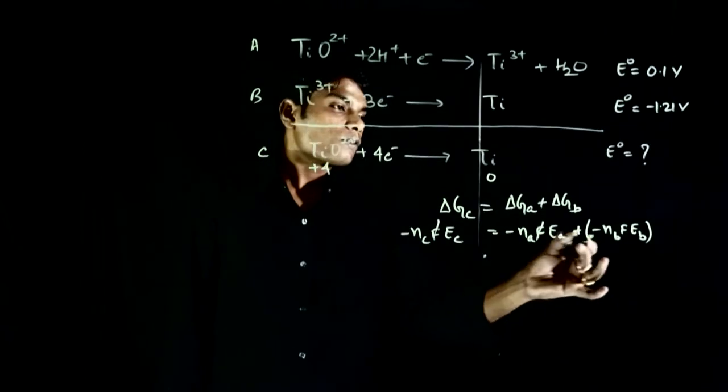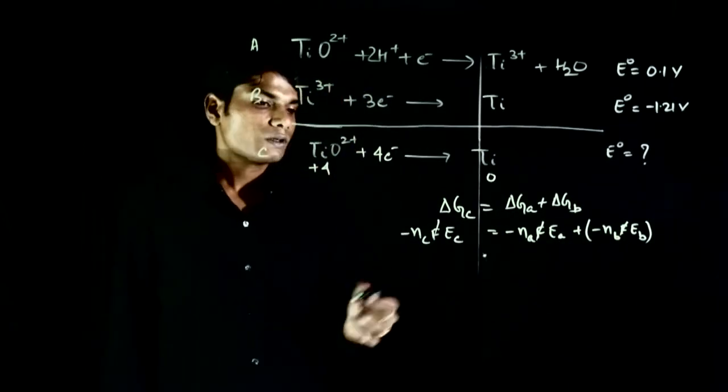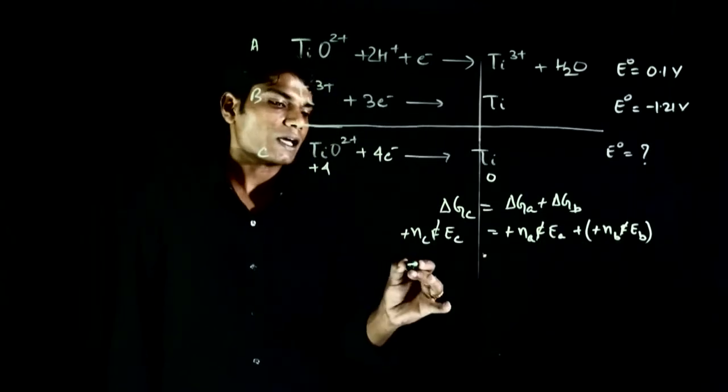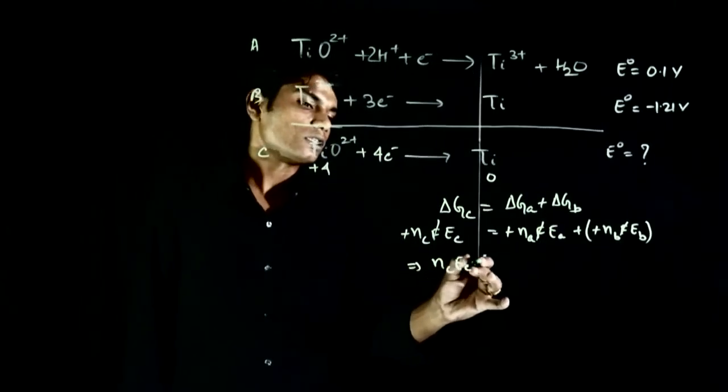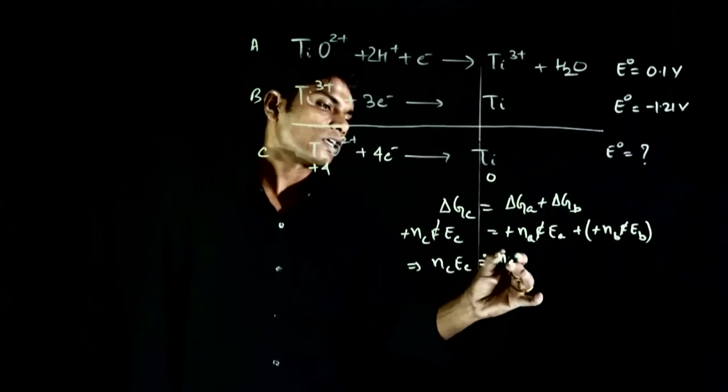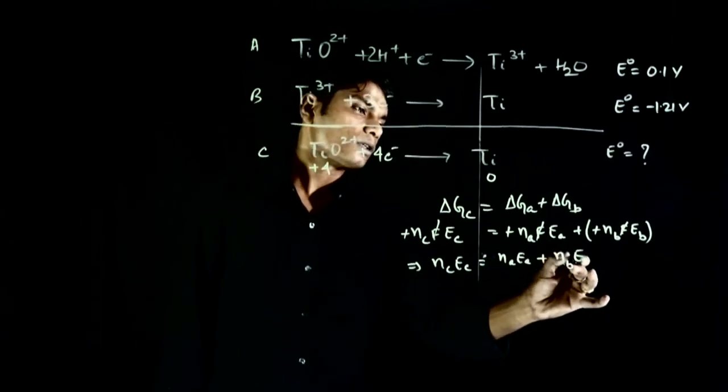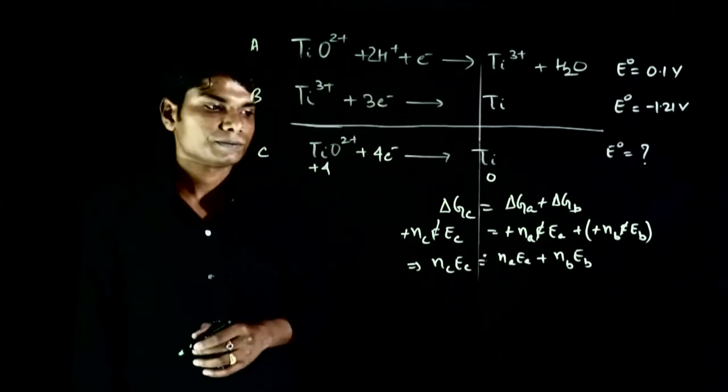Now, F, F, F will go. Minus, minus, minus will go. So, this implies that N of C into E of C is equal to N of A into E of A plus N of B into E of B.